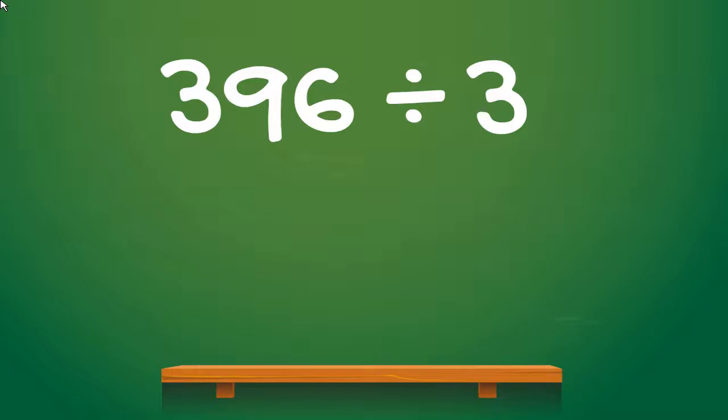Let's take a look at our first sum: 396 divided by 3. Now I know what you're thinking, that doesn't look like a short division sum as it is. Well there are actually four different ways of writing division sums.